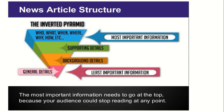The most important information you can write in your article includes who, what, when, where, why, how, etc. Then come supporting details and also background details, followed by general details and important information. The most important information needs to go at the top because your audience could stop reading at any point.